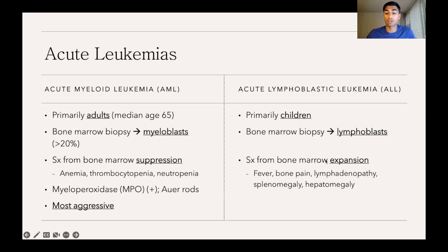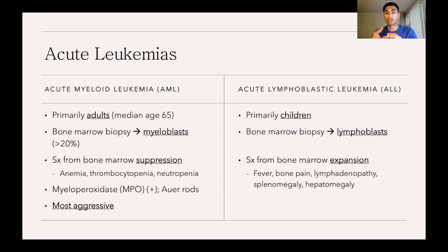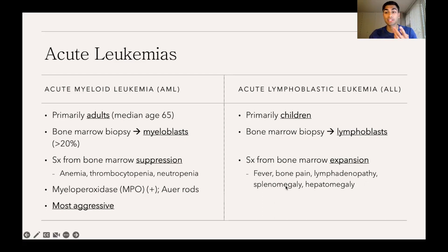The symptoms in ALL result from bone marrow expansion rather than suppression. Think of the factory going into overdrive — cells can't all be produced within the bone marrow, so production shifts to satellite locations like the lymph nodes, spleen, and liver. This results in symptoms like fever, bone pain, and enlargement of those satellite sites — lymphadenopathy, splenomegaly, and hepatomegaly. In reality there is overlap, but this distinction helps broadly separate AML from ALL.